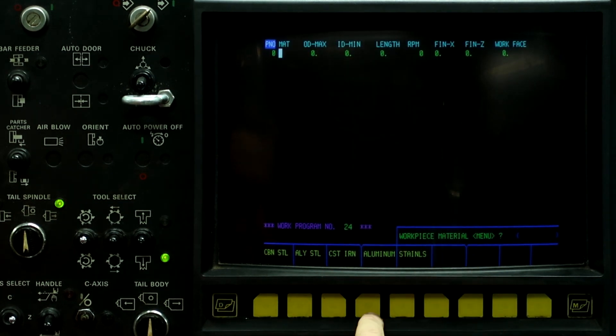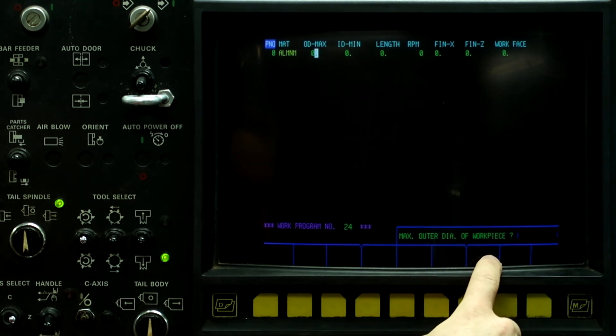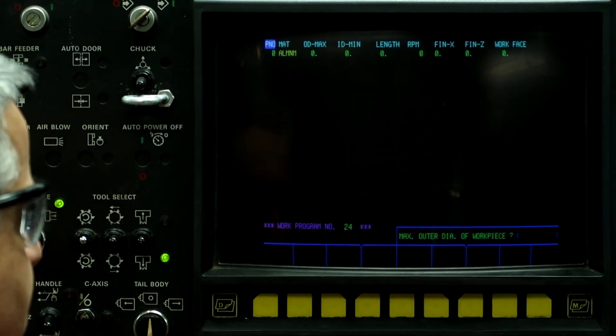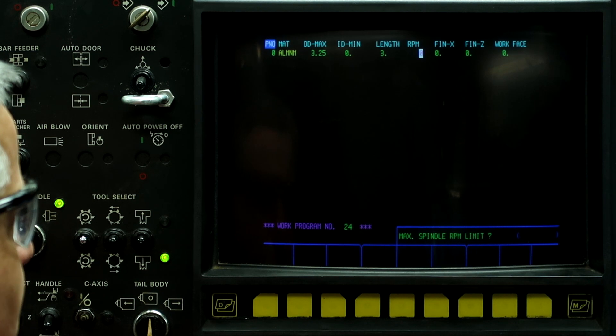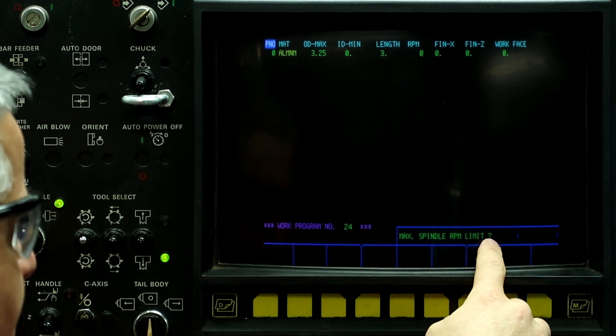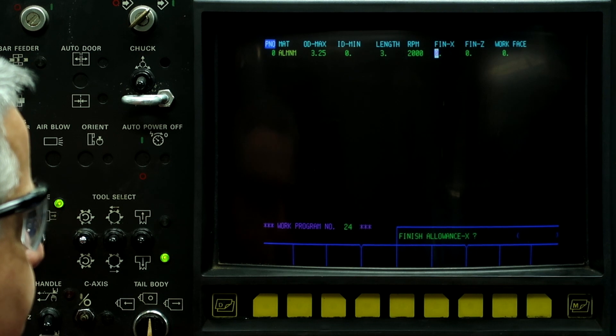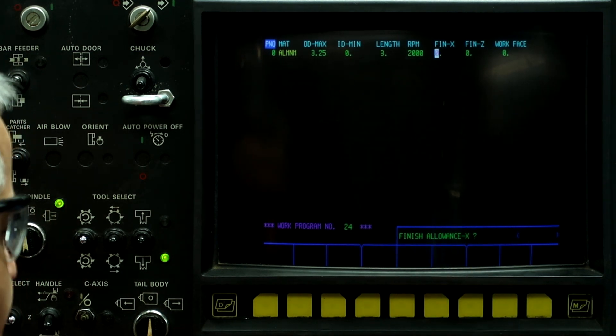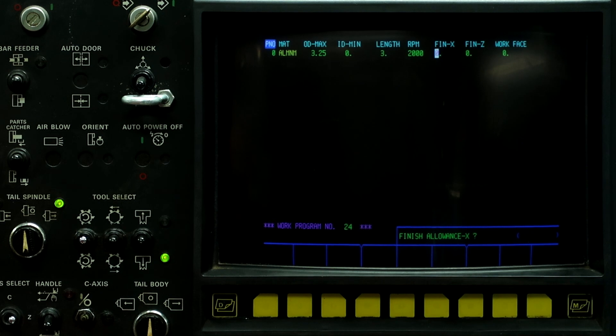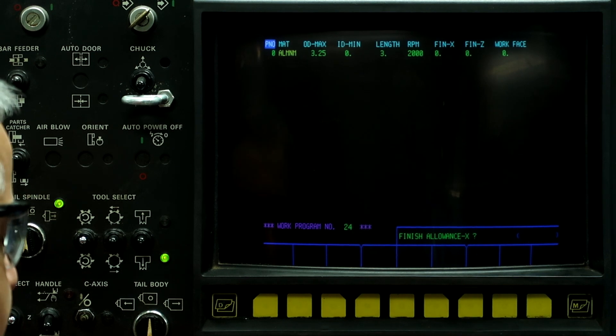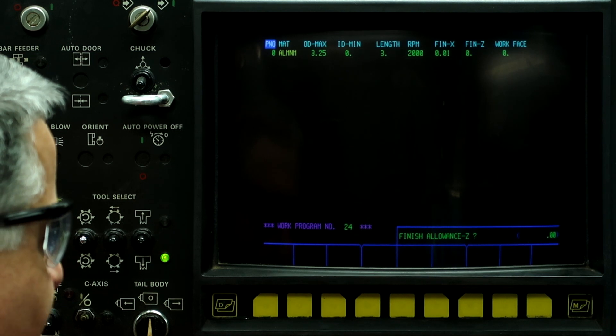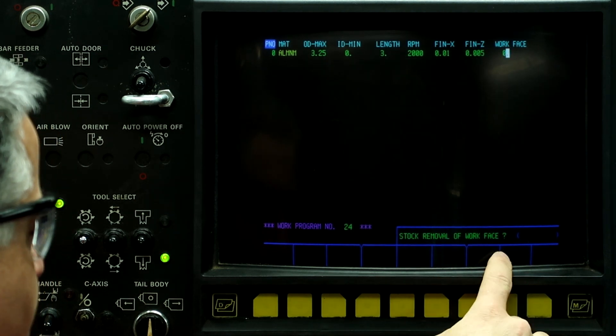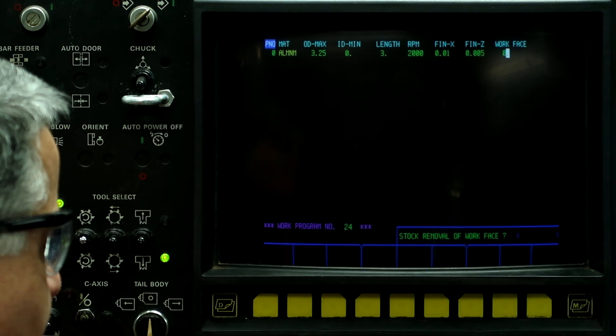This workpiece material is aluminum. Maximum outside diameter is 3.25 inches. Inside diameter is zero. Workpiece length is three inches. Max spindle RPM limit, 2,000 RPM for the whole program. Finish allowance on X. This is for the roughing tools, turning, facing, and boring. This is not the groove tool, but we still need to put it in for the other processes. Give me 10 thousandths on X, 5 thousandths on Z, and stock removable of workface. We're going to take off 50 thousandths.